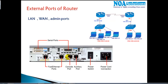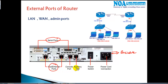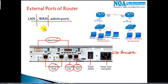Looking at the back side of the router, you can find some serial ports, some Ethernet ports, and a console and auxiliary port. All these ports are categorized into three categories: LAN ports, WAN ports, and administrative ports.